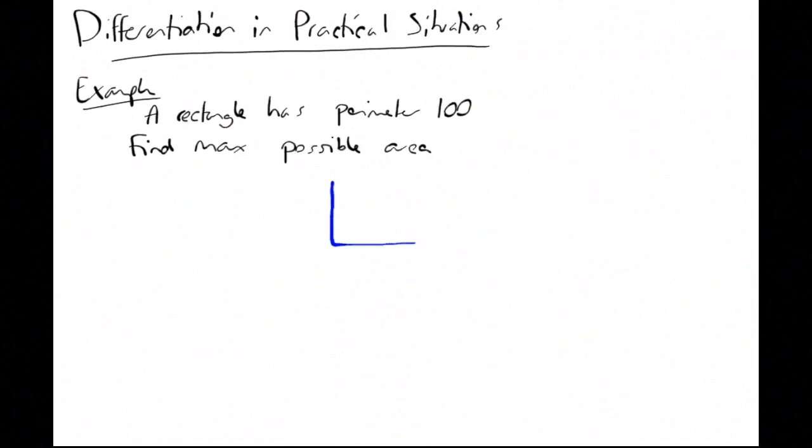We'll give ourselves a general rectangle with sides x and y. The perimeter is x + y + x + y, which is 2x + 2y, and we know that equals 100.